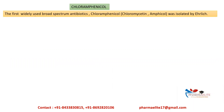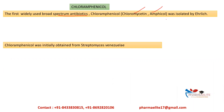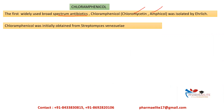Chloramphenicol, the first widely used broad spectrum antibiotic, has other names like chloromycetin and amphicol. It was isolated and was initially obtained from Streptomyces venezuelae. This is the source of chloramphenicol.